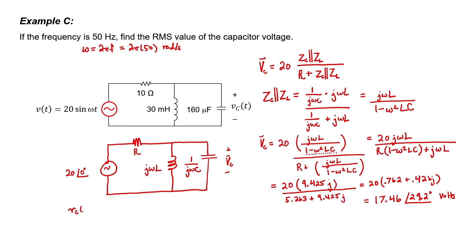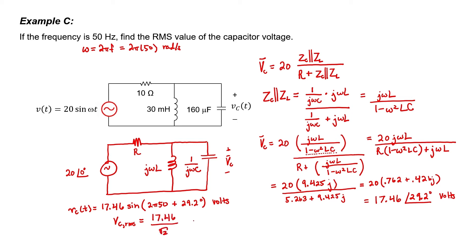We now know the voltage across the capacitor in the time domain. Although we don't need the time-domain form to solve the problem, let's write it out for practice. The RMS voltage is just the amplitude of the sine wave divided by the square root of 2. Since the amplitude here is 17.46 V, the RMS voltage across the capacitor is 12.3 V.